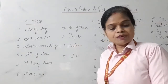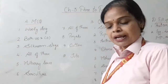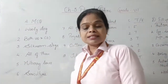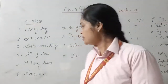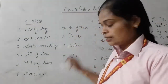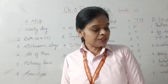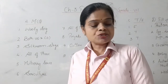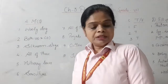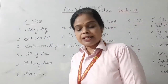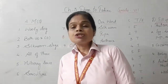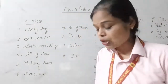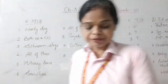Which of the following is obtained from a plant — wool, polyester, silk, or cotton? The answer is cotton; we get cotton from plants. Which of the following is not an animal fiber — wool, silk, pashmina, or jute? Jute is a plant fiber, so it is not an animal fiber.